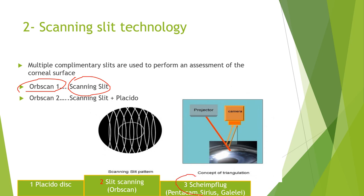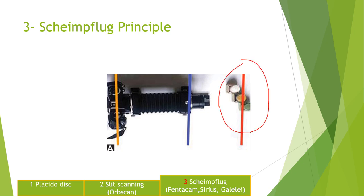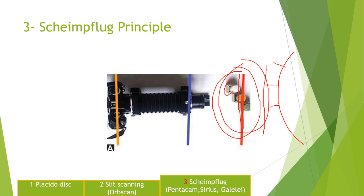Now let's move to the third one which is the Scheimpflug technology. Look — this is a camera and it is taking a photograph of an object that has three colors. The middle color is right in line with the camera so the focus will be better on the middle color, while the other colors will be slightly out of focus. We don't want that with the cornea because the cornea is curved, so we want every part of the cornea to be focused. A simple camera will not solve the problem — we need to use the Scheimpflug principle.